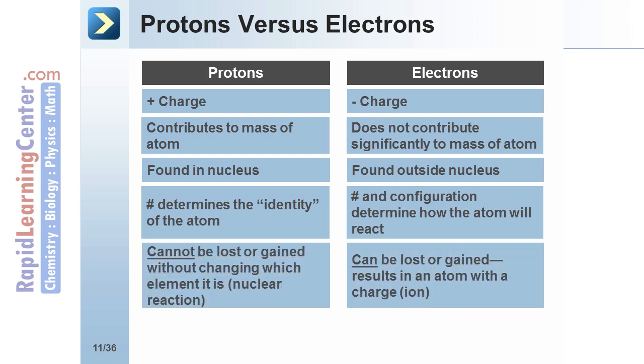Protons cannot be lost or gained without changing the identity of the element. This is possible in nuclear reactions only. It is not possible to change the number of protons in chemical or physical changes.